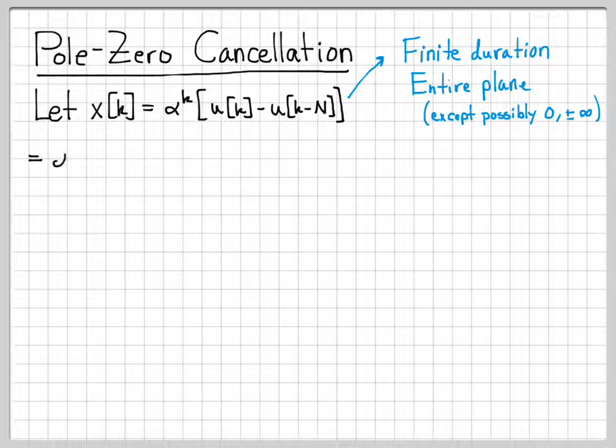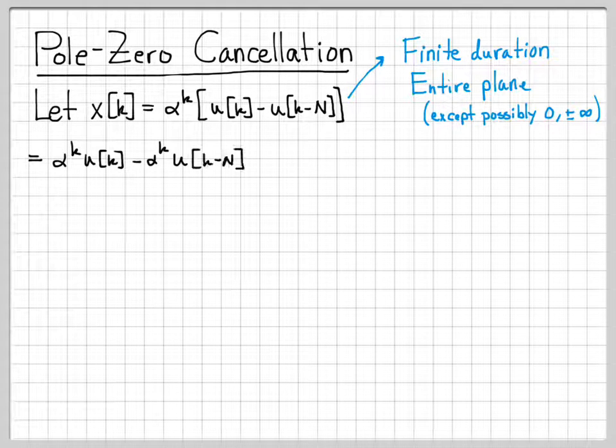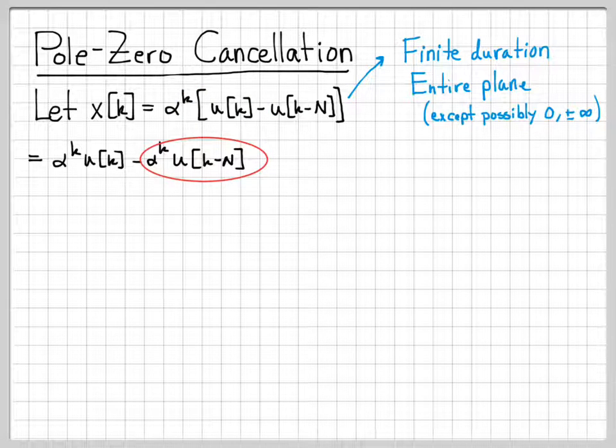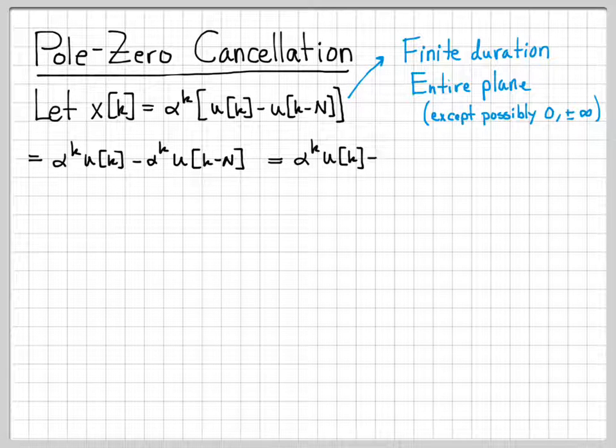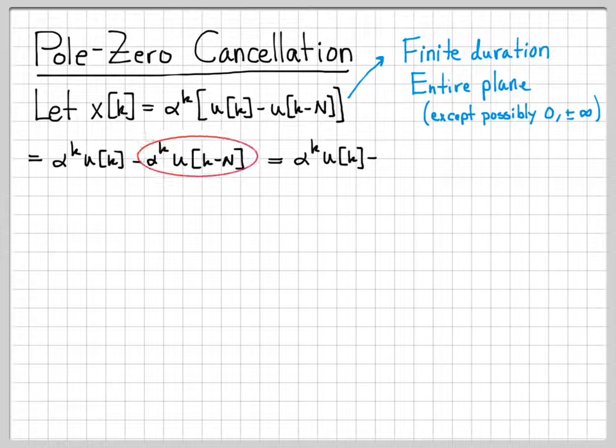So let's go ahead and take the z-transform of this signal. I'm going to break this up into two pieces just by distributing my multiplication. So x[k] is alpha to the k u[k] minus alpha to the k u[k-N]. And I can rearrange this just a little bit. The first term I'll just leave it alone. But when I see this piece right here, I see k on the alpha, but I see k minus N inside the unit step.